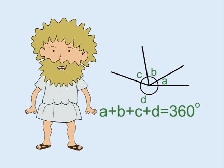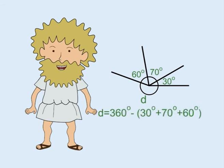In this example, A equals 30 degrees, B equals 70 degrees, and C equals 60 degrees. So D equals 360 minus 30 plus 70 plus 60, which is the same as 360 minus 160, or 200 degrees.